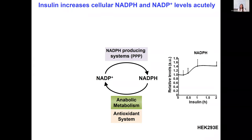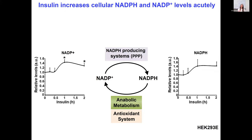We started with a simple experiment in HEK-293 cells, in which we serum-starved the cells and then treated them with insulin over a time course. We observed that within one hour of insulin stimulation, we see an increase in NADPH levels. At the same time, we know that insulin signaling increases glucose uptake, which can increase flux through the pentose phosphate pathway, so this makes sense. In parallel, we also looked at NADP levels and found that, similarly to NADPH, insulin also increased NADP levels.